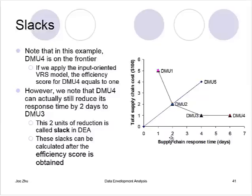The efficiency score in this case says whether you can reduce the two inputs in the same proportion. For example, DMU 5 — yes, you can reduce them in the same proportion to reach DMU 2. However, once DMU 5 is moved to DMU 2, we cannot reduce any of the two inputs. So DMU 5 is not efficient and also does not have any slacks. However, DMU 4 will have slacks. Now, if I add another DMU somewhere in here, and that DMU is projected into DMU 4, then not only will that DMU have an efficiency score less than 1, indicating it is not efficient, but it also will have slacks.